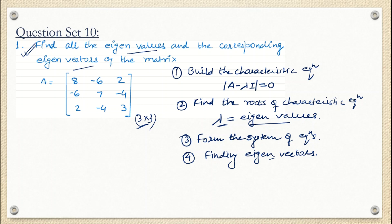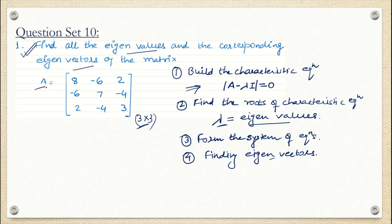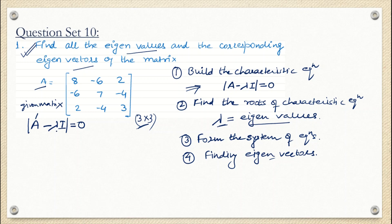The very first step is to build the characteristic equation: determinant of (A minus λI) equals 0. We explained how to build this in the last class. Here is the given matrix A. We have to find A minus λI, take its determinant, and equate it to 0. A is the given matrix and λ is the eigenvalue we have to calculate.